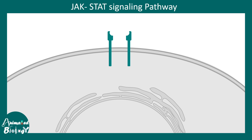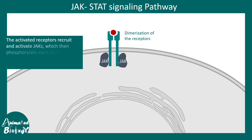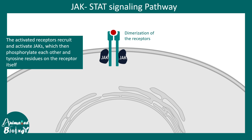The JAK-STAT signaling pathway begins with cell surface receptors, most commonly cytokine receptors. A cytokine binds to these receptors leading to dimerization — these are the membrane surface events. These receptors then bind to JAK, or Janus kinase, which are kinase enzymes that phosphorylate downstream targets.